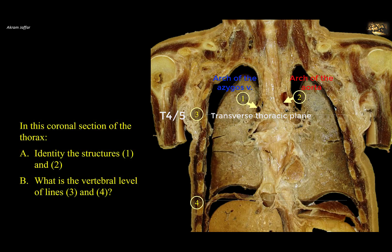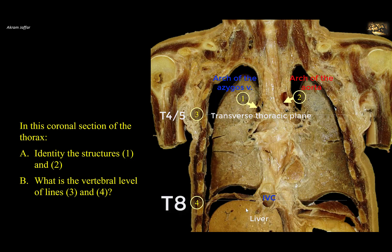To determine the vertebral level of line 4, note the right dome of the diaphragm, the left dome of the diaphragm, and the region of the central tendon of the diaphragm. The central tendon is located between the right and left domes, and as you can see, it is penetrated by the inferior vena cava as it leaves a groove in the liver. The opening of the inferior vena cava in the central tendon of the diaphragm is located at the level of T8 vertebra, which is the level of line 4.